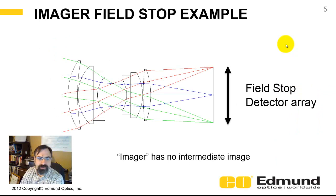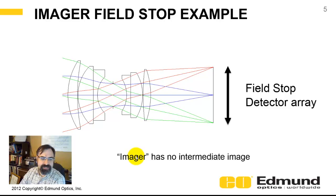Here is a layout showing a simple double Gauss, and this detector plane is going to be your field stop. I make the distinction to say this is an imager, because it does not have an intermediate image — and that distinction will become very important later.